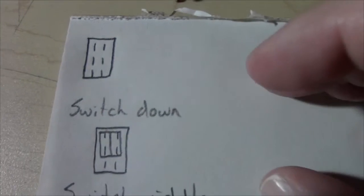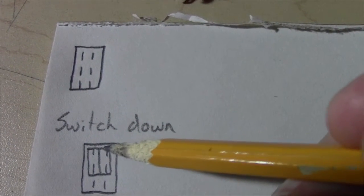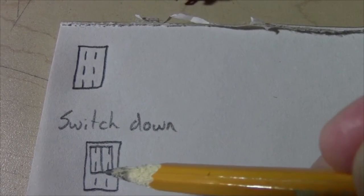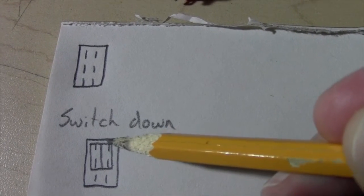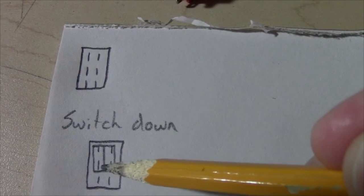So when the switch is down, the upper right and the middle right are connected together. And the upper left and the middle left are connected together.